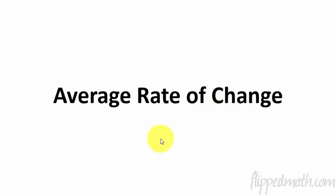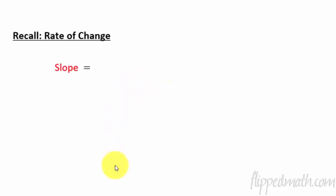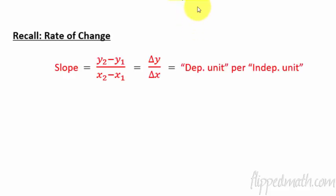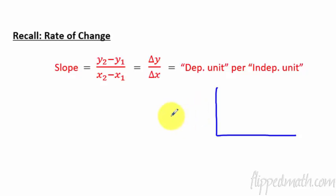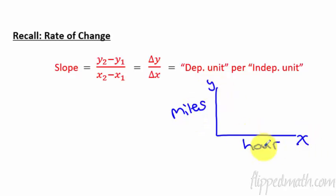So average rate of change — let's remember what in the world that is. If you recall, rate of change is basically the same thing as just slope. This is like our pre-algebra days where we'd have slope and you'd take the two different y values and subtract them. Another fancy way of writing this is to use delta y over delta x — that just means the change in y over the change in x. That is also, if we wanted a deeper conceptual understanding, the dependent unit per every independent unit.